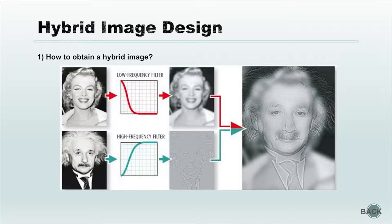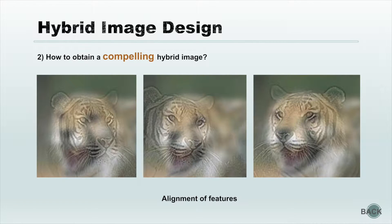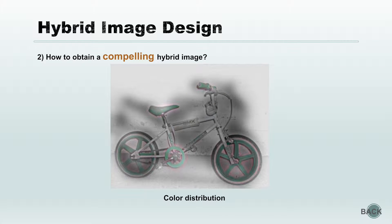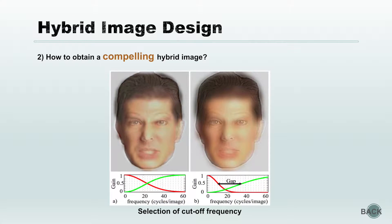This is straightforward. However, the problem is how to obtain a compelling hybrid image. One approach is to align the features inside the two images. Comparing three pictures, the third image has the best effectiveness because the first image simply combines two images without any alignment, the second aligns only the eyes, while the third aligns not only the head pose but also the eyes and mouth. Furthermore, color distribution can be used — for example, color in the high-frequency component strengthens the bicycle and reinforces the shadow of the motorbike in the low-frequency components. The cutoff frequencies for the filters also need to be chosen carefully to achieve the best effect.